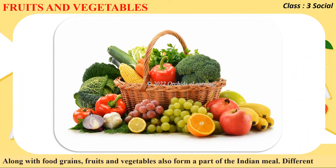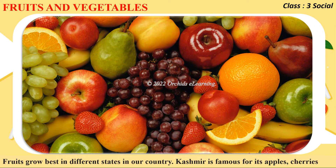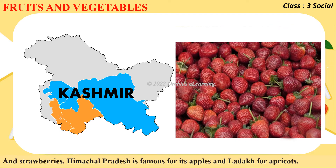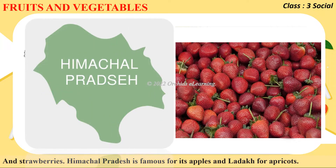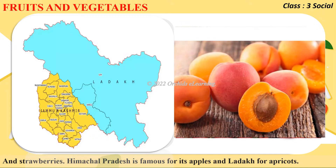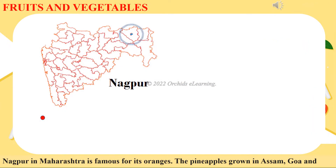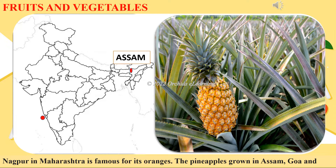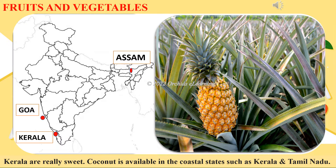Along with food grains, fruits and vegetables also form a part of the Indian meal. Different fruits grow best in different states in our country. Kashmir is famous for its apples, cherries, and strawberries. Himachal Pradesh is also famous for its apples, and Ladakh is known for apricots.